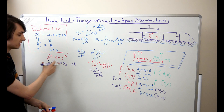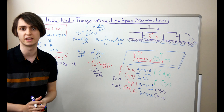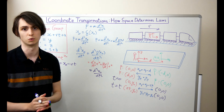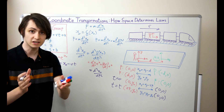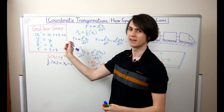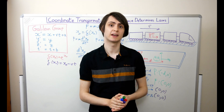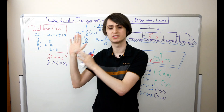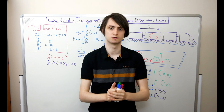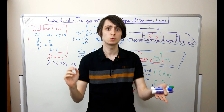In fact, that is an example of the most general set of coordinate transformations that preserve Newton's laws. These get a special name: they're called the Galilean group. So there we have it — in Newtonian mechanics, these are the coordinate transformations that preserve the laws of physics.